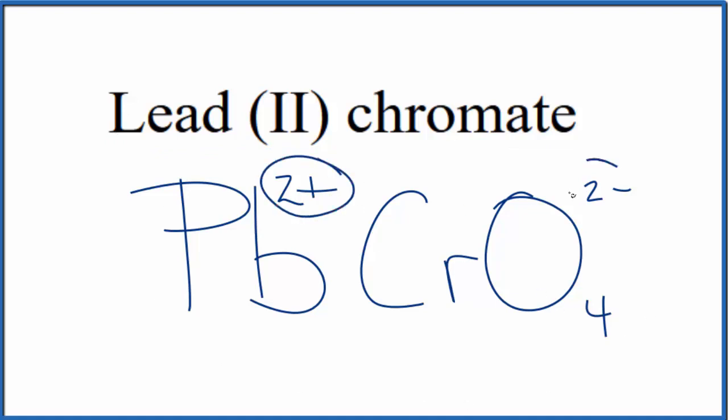The charges here, they need to add up to zero, give us a net charge of zero. So 2+, 2-, that adds up to zero. So this is the formula for lead (II) chromate, PbCrO4.